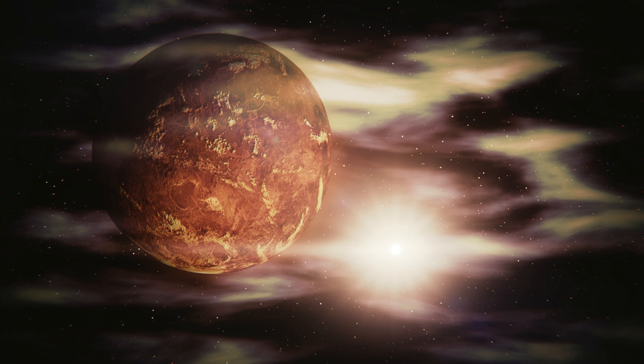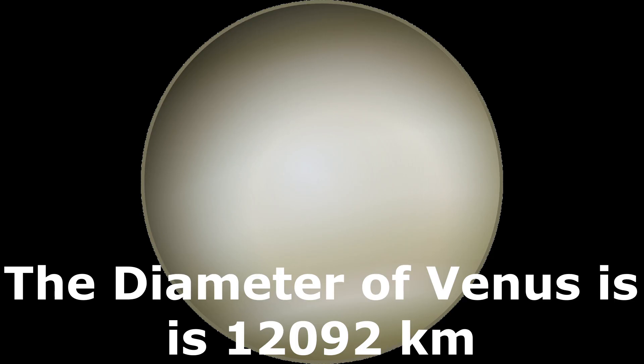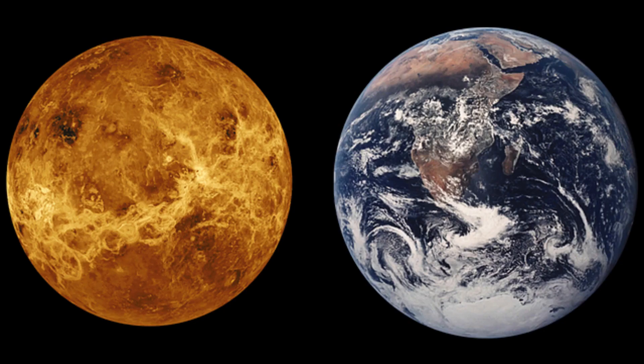Unlike Earth, Venus has no flattening around the poles. It has a perfect spherical shape. The diameter of Venus planet is 12,092 kilometers, which is smaller than Earth by 650 kilometers.